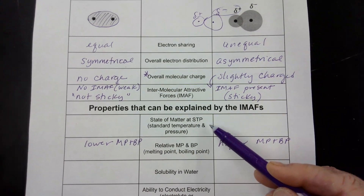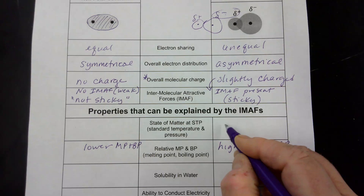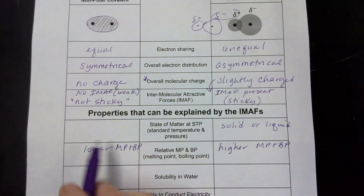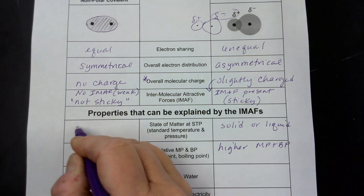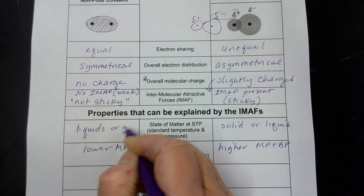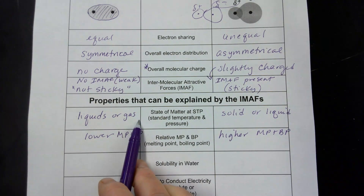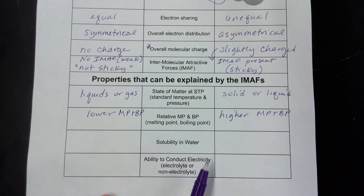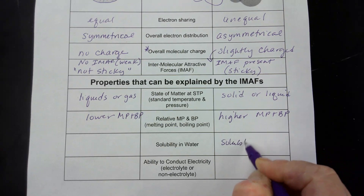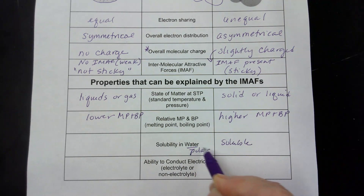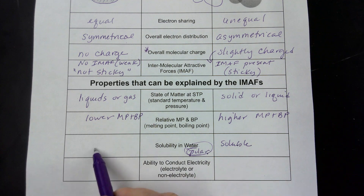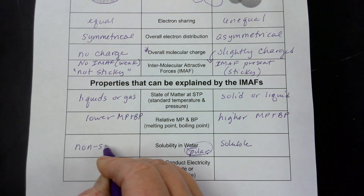What that means is that the state of matter at standard temperature and pressure is that polar covalents are going to tend to be in the solid or maybe the liquid state. Whereas nonpolar covalents, with their lower melting points and boiling points, are going to tend to be liquids or gases — it's going to take very little energy to melt them or even turn them into a gas. For solubility in water: polar covalents are very soluble in water because water is also polar, so it will dissolve those polar covalent compounds pretty readily. But because nonpolar molecules are not charged, they are going to be non-soluble in water.